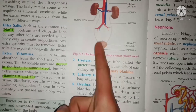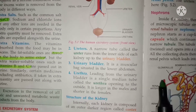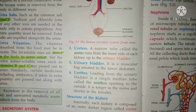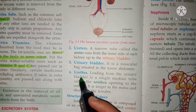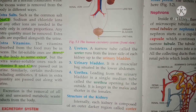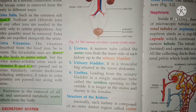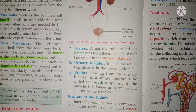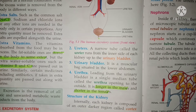The ureters run from the kidneys to the urinary bladder. The urinary bladder is a muscular sac situated in the lower abdomen — you can see its position in the image. The urethra leads from the urinary bladder and is a single median tube through which urine passes out of the body. The urethra is longer in males and shorter in females.